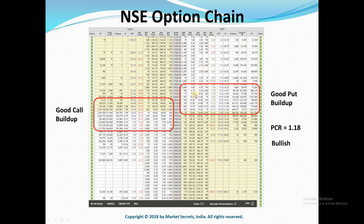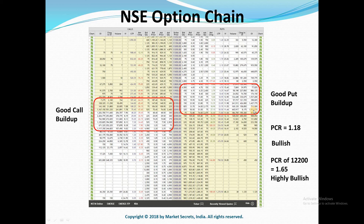To get the immediate picture, you can select a specific strike price and view its PCR. In this case the nearest price is 12,200. If you divide 19 lakh by 11 lakh, the PCR of the 12,200 strike price is 1.65, which indicates Nifty is currently highly bullish. So if the price drops to 12,200, you can take a long — that is the inference you can get from this data.